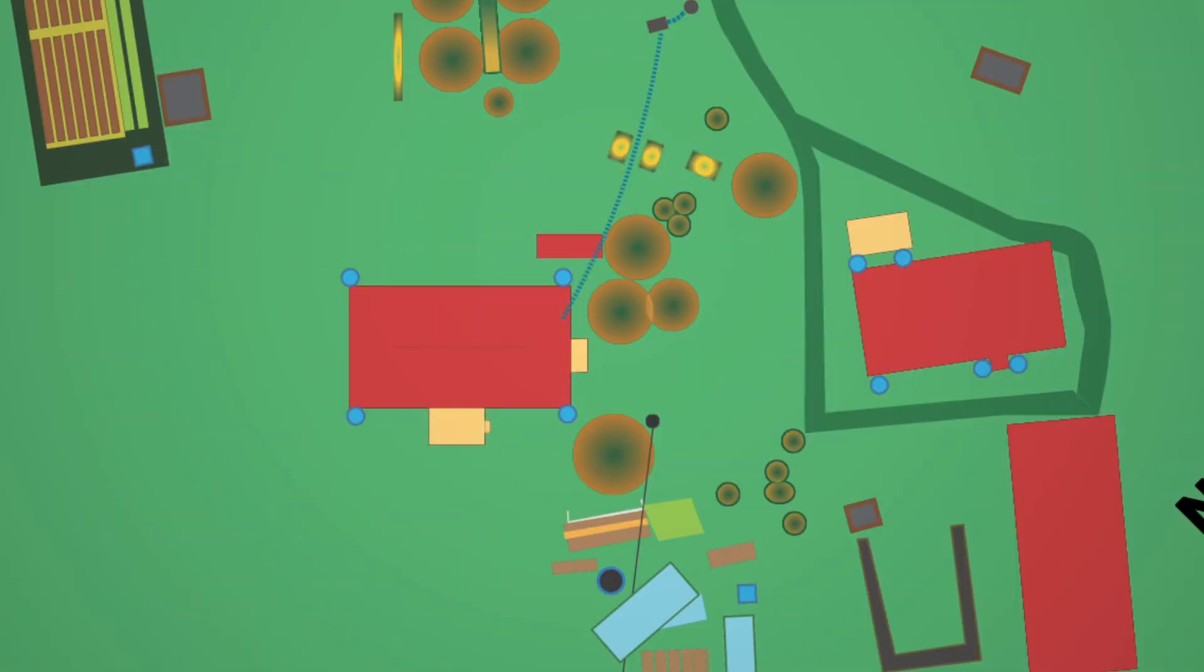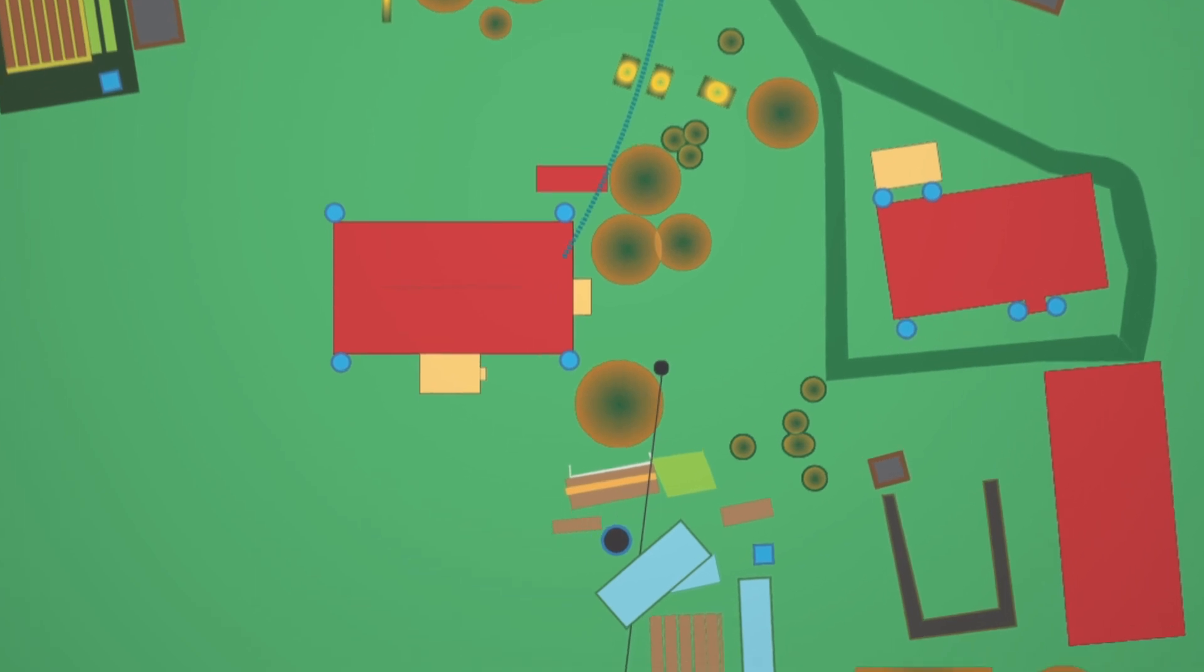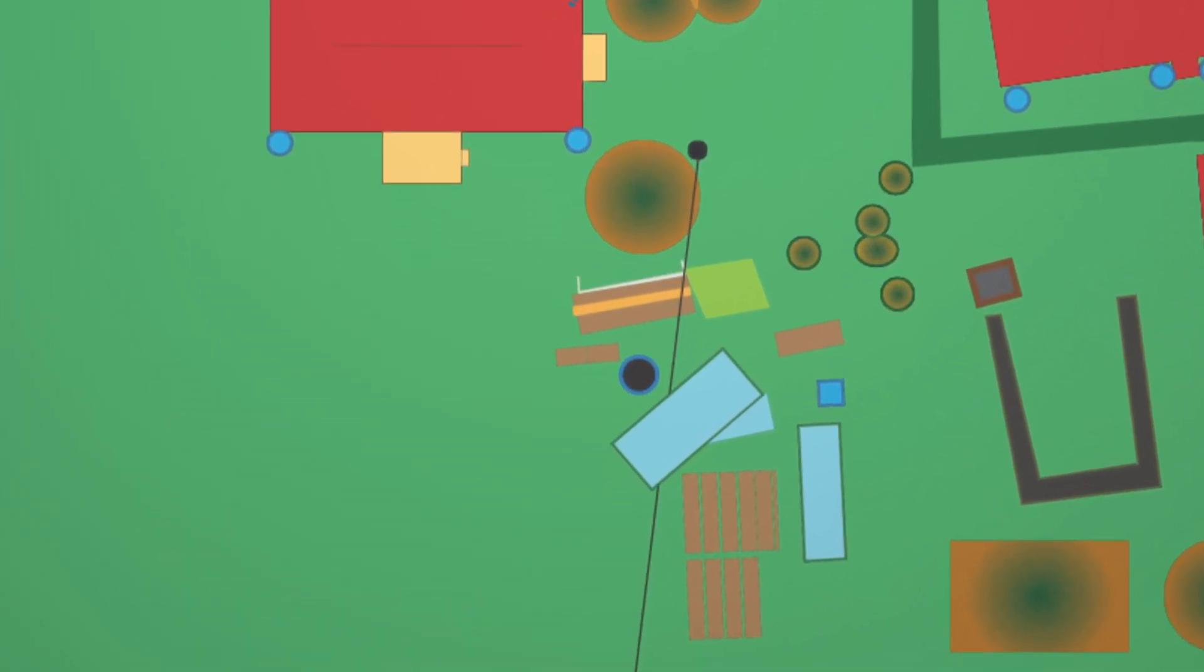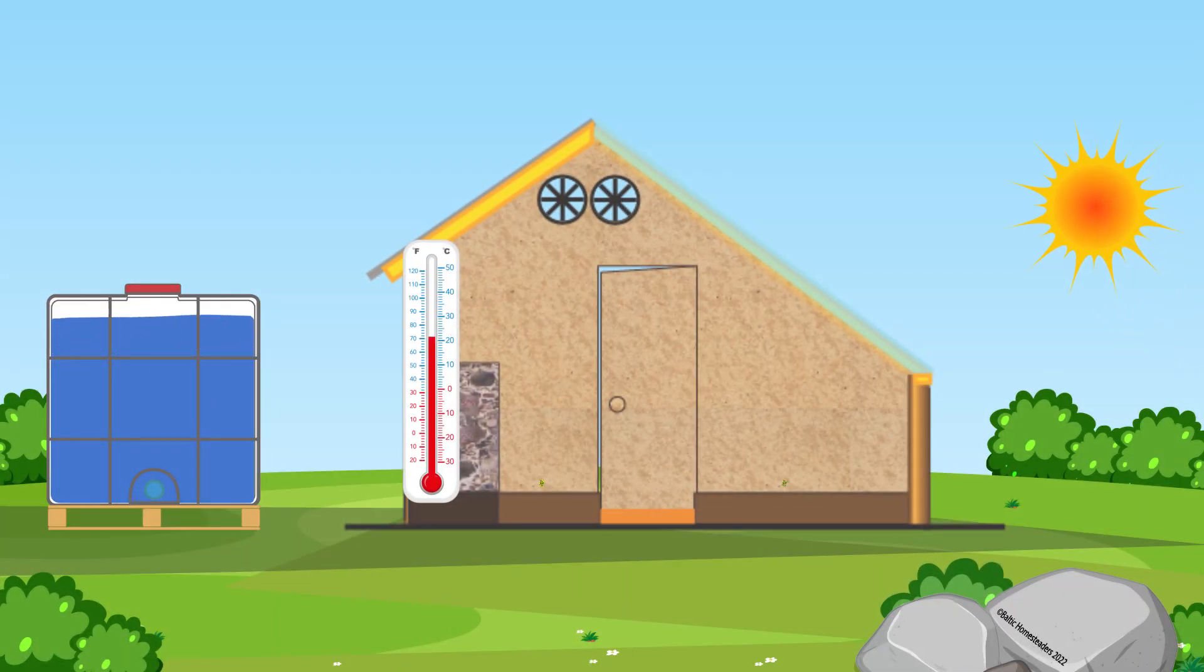In this video, I want to focus more on how we could control elements of our homestead to make our lives easier. Now I'm going to focus on greenhouses because they're an essential tool for homesteaders, allowing us to grow plants in a controlled environment.